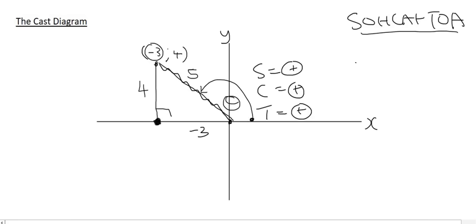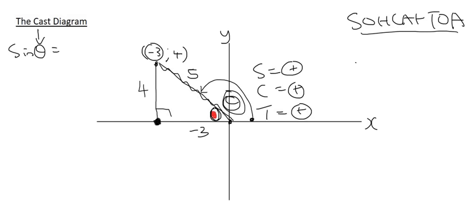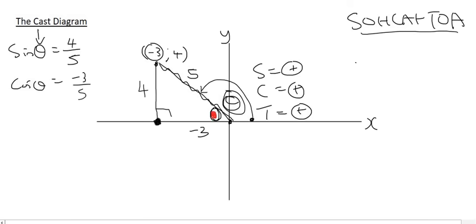Now we'll do sin, cos, and tan — base everything off of this little inside angle. Teachers in class do this anyway, but they just don't explain the difference between the big outside angle and the inside one. So basing everything on the little red angle: sin theta is opposite over hypotenuse, which is 4 over 5. Cos theta is the adjacent, which is minus 3, over 5. Tan theta is the opposite, which is 4, over the adjacent, minus 3. So sin is positive, cos is negative, and tan is negative.